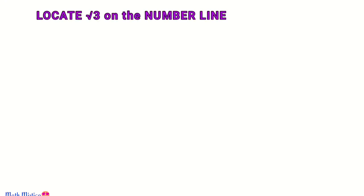We are going to use Pythagoras theorem to find out the position of √3 on the number line. The number under the root is 3, so we have to find out two numbers whose sum of squares will give us 3 or any number less than 3.